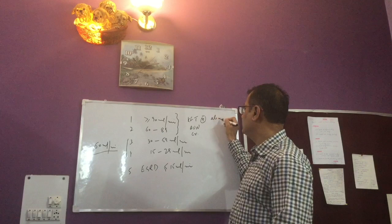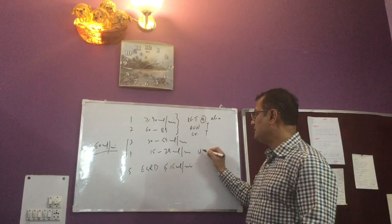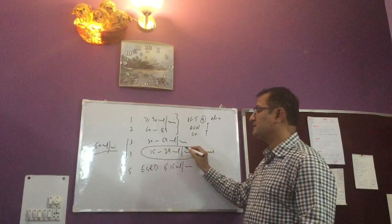And once the kidney function test is now abnormal, that is once the blood urea nitrogen starts rising and creatinine starts rising, then these patients become symptomatic. And we call those symptoms as uremia. And we discussed that day that these symptoms of uremia typically arise in stage 4.